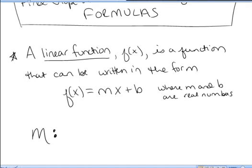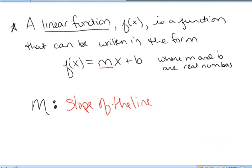When we have an equation written in this form, f of x equals mx plus b, m stands for the slope of the line. What is the slope of a line? The slope of a line is a number used to describe the steepness of the line.